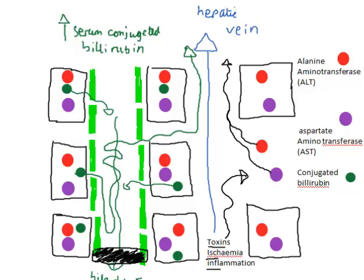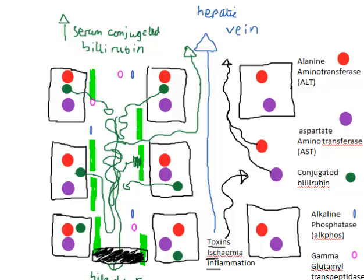As well as causing a raised conjugated bilirubin level, damage within the bile cannulae themselves can lead to a release of other factors, by damaging the cells which line the cannulae. These cells contain a range of other enzymes not found in the hepatocytes, including gamma-GT and alkaline phosphatase. These can be released when the cells lining the bile ducts are damaged. When they are released, you can see them in the systemic circulation and measure them when we do our LFT blood test.